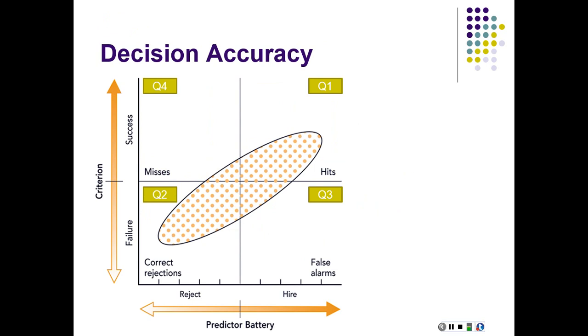All right, decision accuracy. I relabeled this a little bit from our textbook because I thought it was strange that they didn't put Q1, Q2, Q3, and Q4 on the chart, so I did that. This goes back to what I was gesturing about in the last segment. You've got the predictor battery along the x-axis on the bottom, criterion scores along the y-axis on the left. We've divided the predictor battery into having a cutoff so that anybody below the score will be rejected, anybody above the score will be hired.